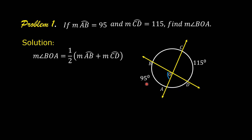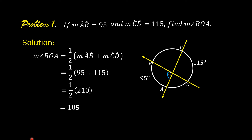This is now equal to one-half times the quantity 95 plus 115, which is one-half of 210. And one-half of 210 is equal to 105. So the measure of angle BOA is equal to 105 degrees.